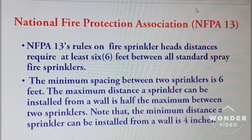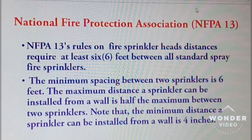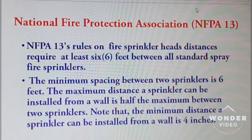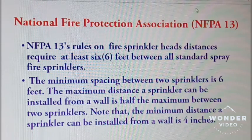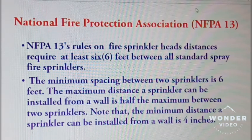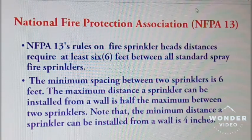National Fire Protection Association. NFPA 13 rules on fire sprinkler head distances require at least 6 feet between all standard fire sprinklers. The minimal spacing between two sprinklers is 6 feet. The maximum distance a sprinkler can be installed from a wall is half the maximum distance between two sprinklers. Note that the minimum distance a sprinkler can be installed from a wall is 4 inches.